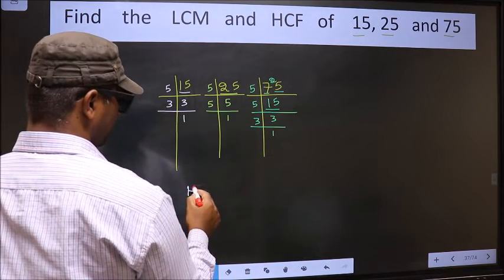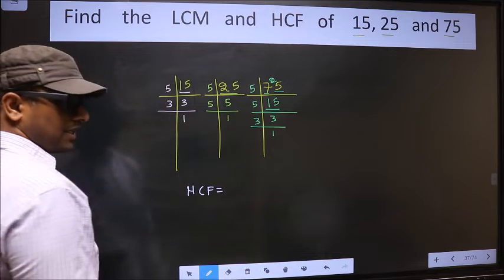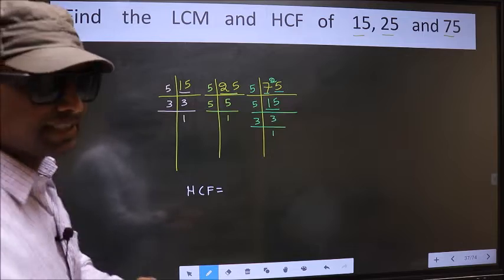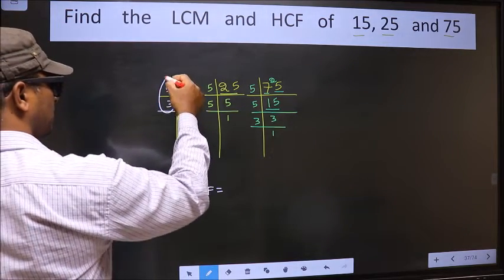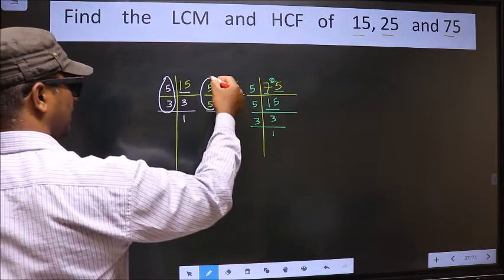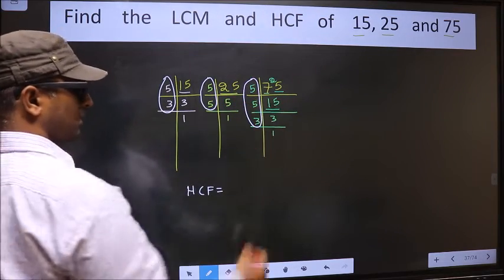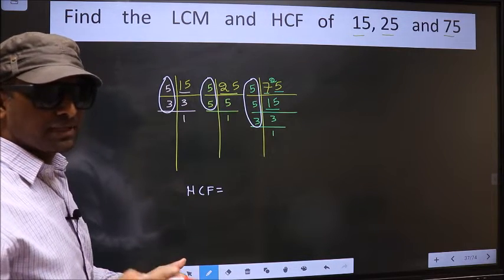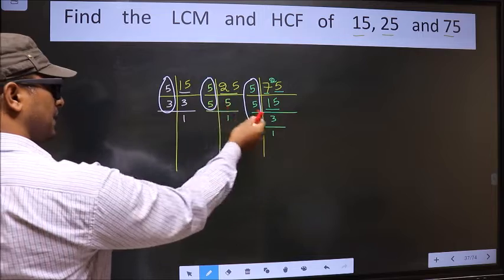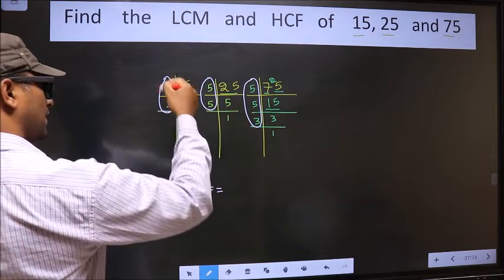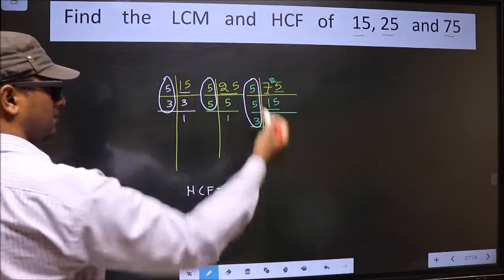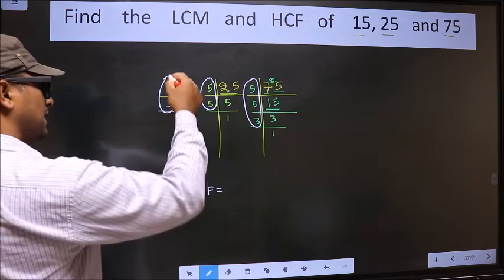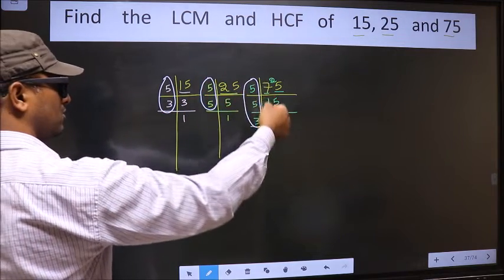Now our HCF is, HCF is the product of numbers which should be present over here and here and also here. I repeat, HCF is the product of numbers which should be present in these 3 places. Here and here and also here.